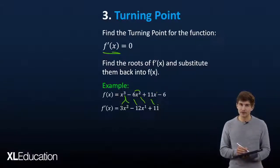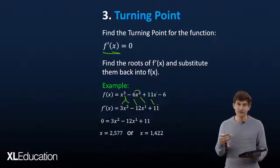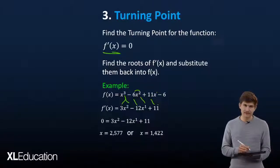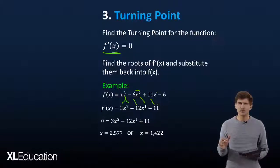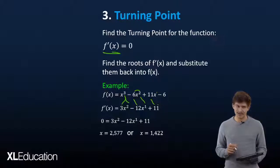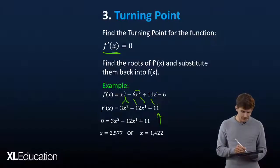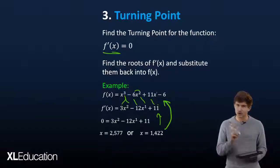Now set the first derivative to zero and find its roots. Once you have the quadratic form, use whatever you're most comfortable with — the quadratic formula is simplest but not necessarily the most efficient. Using the quadratic formula on our first derivative gives us 2.577 and 1.422. That's what we pay for having such nice x-intercepts and y-intercepts. Before plotting, don't forget to find the y values — substitute back into the original function, not the derivative.